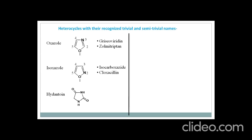Now next is hydantoin. Hydantoin has a 5-membered ring containing 2 nitrogens, and this ring is completely saturated with 2 oxygen atoms present at the 2nd and 4th positions. So you give the numbering to this ring. An example of a drug having this hydantoin ring is phenytoin, which is used as an anti-epileptic drug.